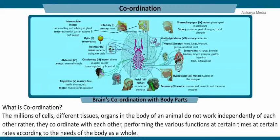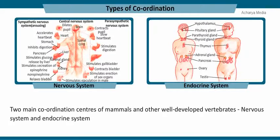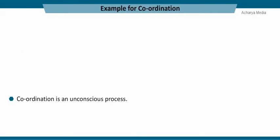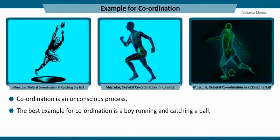What is coordination? The millions of cells, different tissues, and organs in the body of an animal do not work independently of each other. Rather, they coordinate with each other, performing various functions at certain times and at certain rates according to the needs of the body as a whole. The nervous system and endocrine system are the two main coordination centers of mammals and other well-developed vertebrates. Coordination is an unconscious process.